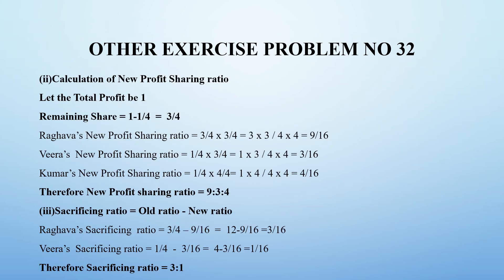The first working note is to find the new profit sharing ratio and sacrificing ratio. We assume total profit is 1. The new partner Kumar gets one-fourth share, so the remaining share is 1 minus 1/4, which is 3/4. The new profit sharing ratio is calculated using old ratio multiplied by remaining share. Raghava's new ratio: old ratio 3/4 into remaining share 3/4, so numerator 3×3 and denominator 4×4 gives 9 by 16.